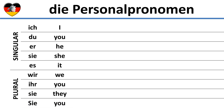Now let's take a detailed look at the pronouns. Let's start with the singular pronouns. While in English, I is always spelled with a capital letter, ich in German is spelled with a small i.